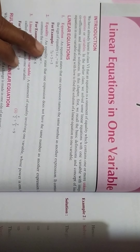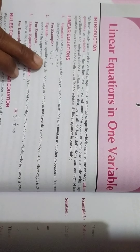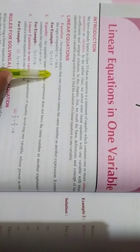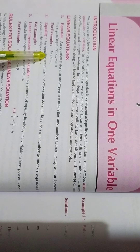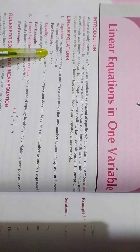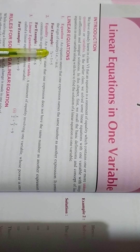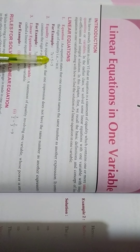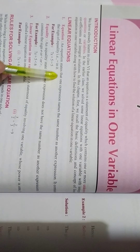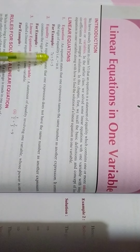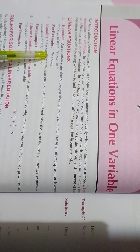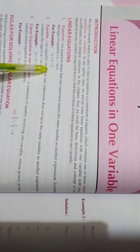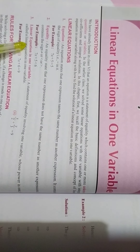For example, 7x plus 5 is equal to 5 — here is a linear equation. So here in our equation, we can see one variable, which is x. When we have other variables, we can see them in other expressions. So 7x plus 5 equals 5 is a linear equation.